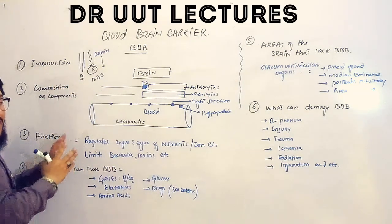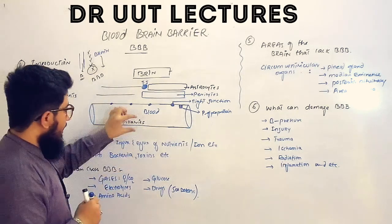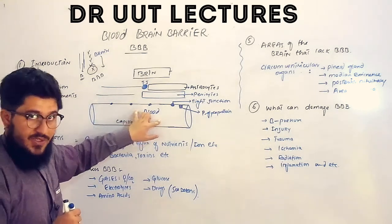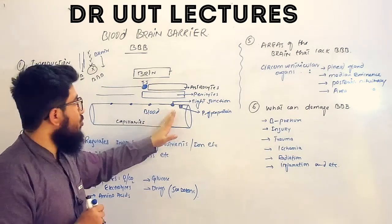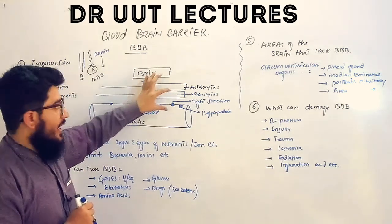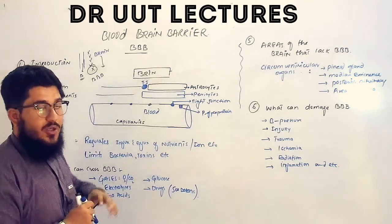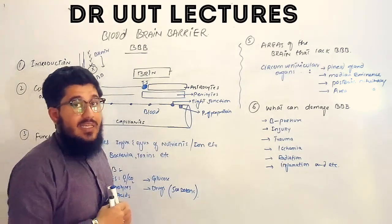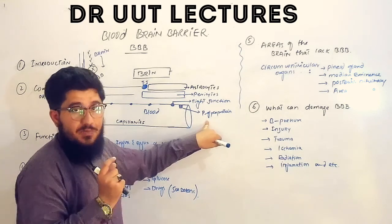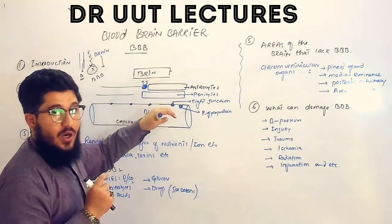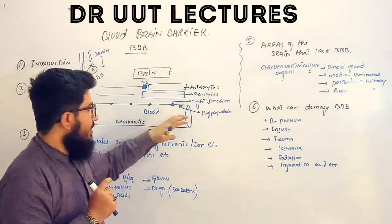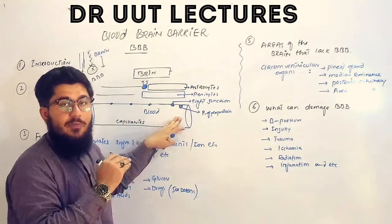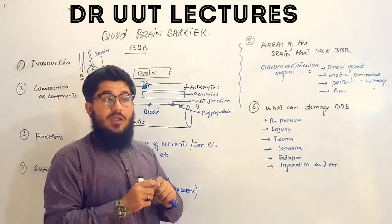Now let's look at the composition of the blood brain barrier. Consider a blood vessel — capillaries — with blood present inside. Substances wanting to move from the capillaries towards the brain tissues or cells face a barrier. The first component is the P-glycoprotein, a protein that uses ATP energy to pump out toxins and drugs that have already moved in, pumping them back out towards the blood.